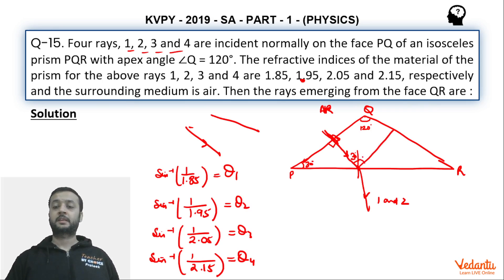Yaha par TIR ho jayega, hence this angle will also be 30. Ab yeh 90 hai, yeh 60 ho gaya, yeh 120 hai, toh definitely yeh wali jo ray yaha par reflect hogi, yeh normal incidence yaha par ho jayega because yeh 90 hai, yeh 60 hai, yeh 120 hai. That means these two rays 3rd and 4th are going to again strike normally and hence they are going to come out definitely.